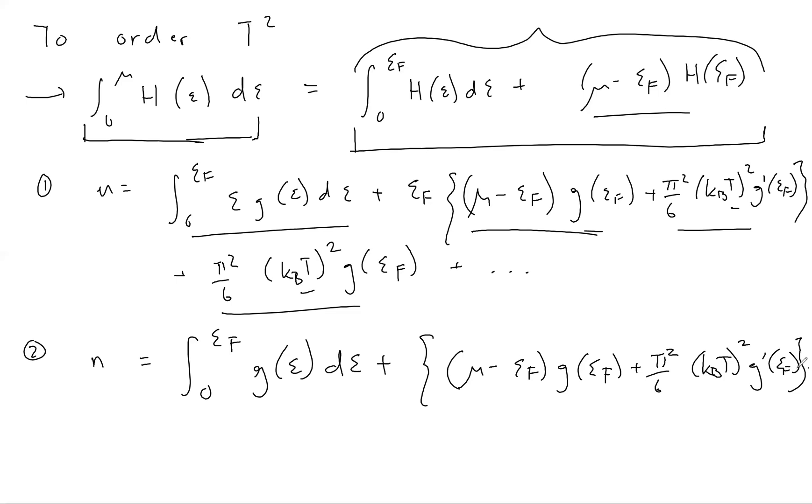Now we can make a very important simplification by noting the following fact: the density is temperature independent by assumption. We have assumed in the Sommerfeld model that the density of electrons is given - it's fixed, it cannot change with temperature. That means this term in the braces here must equal zero. This is a key step in this process. Let us set zero equal to the term in the braces.